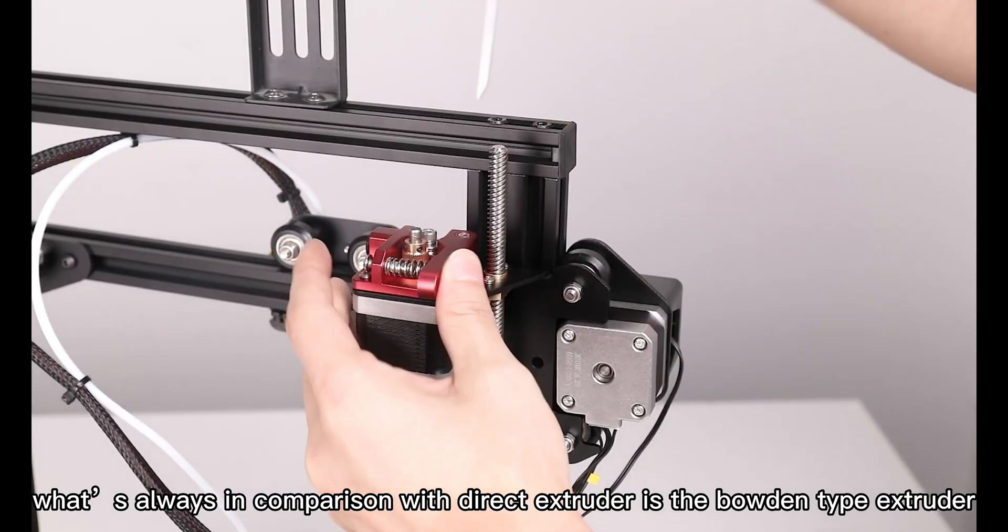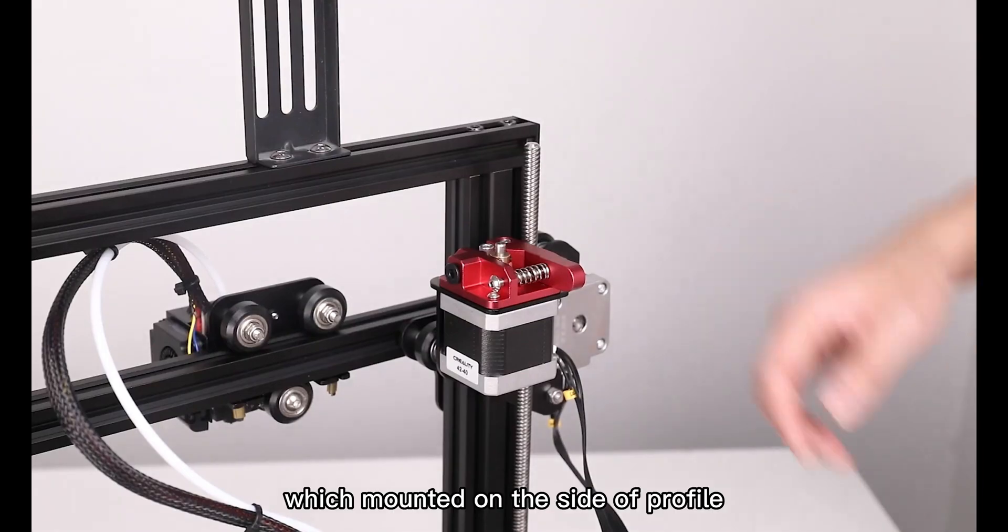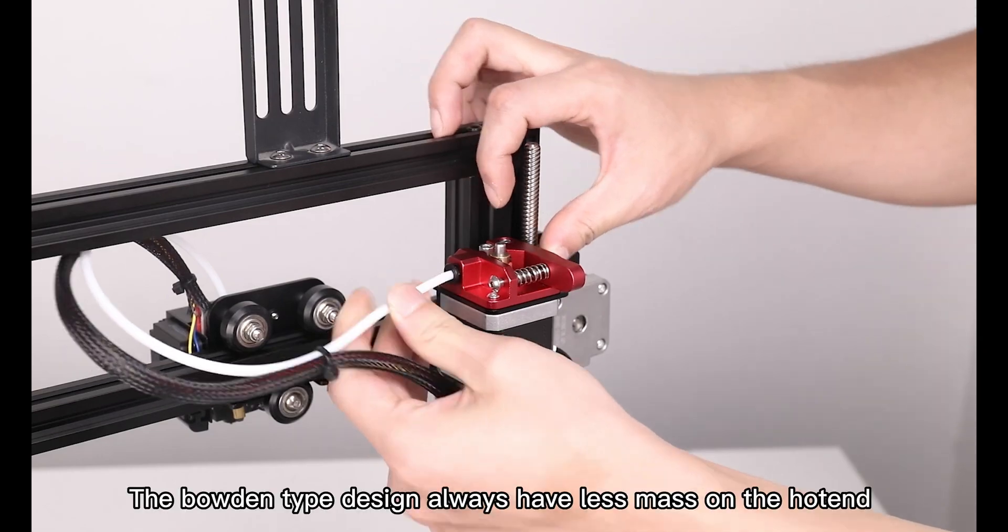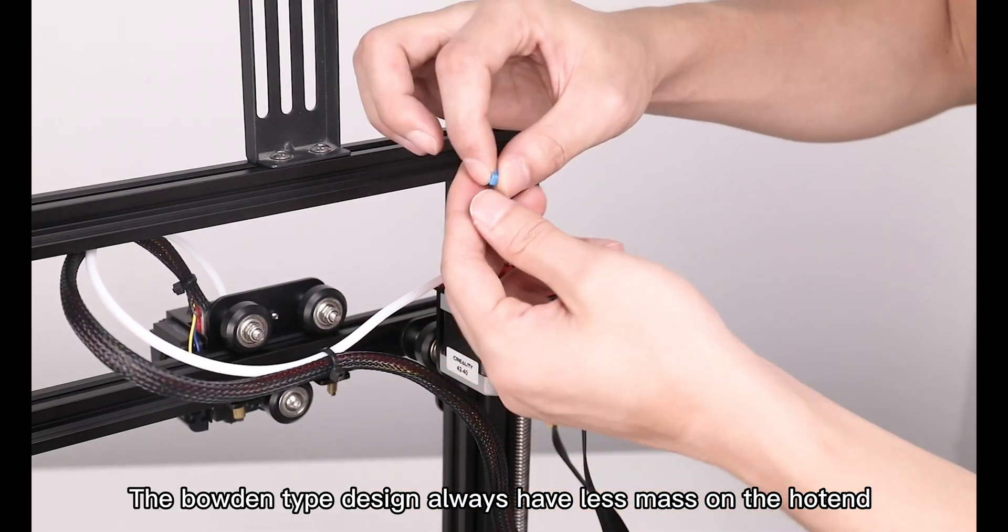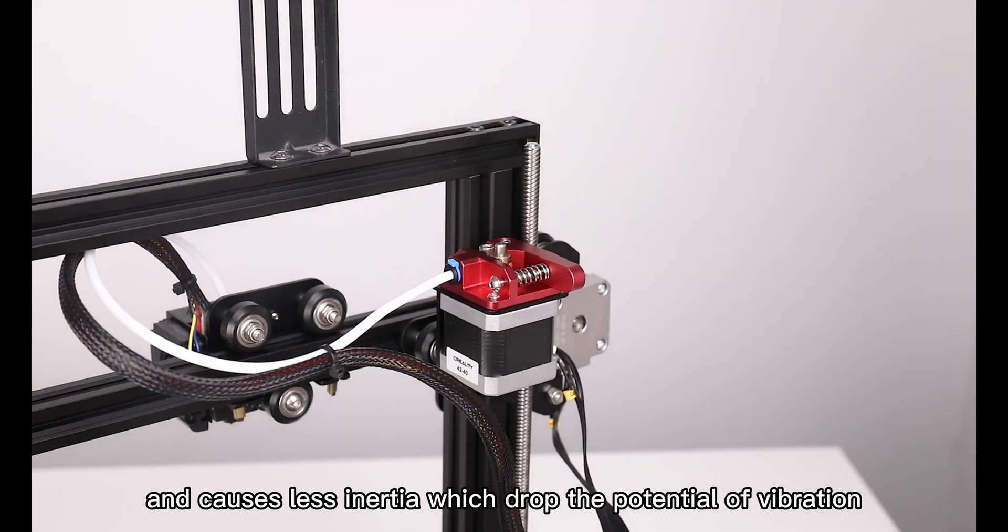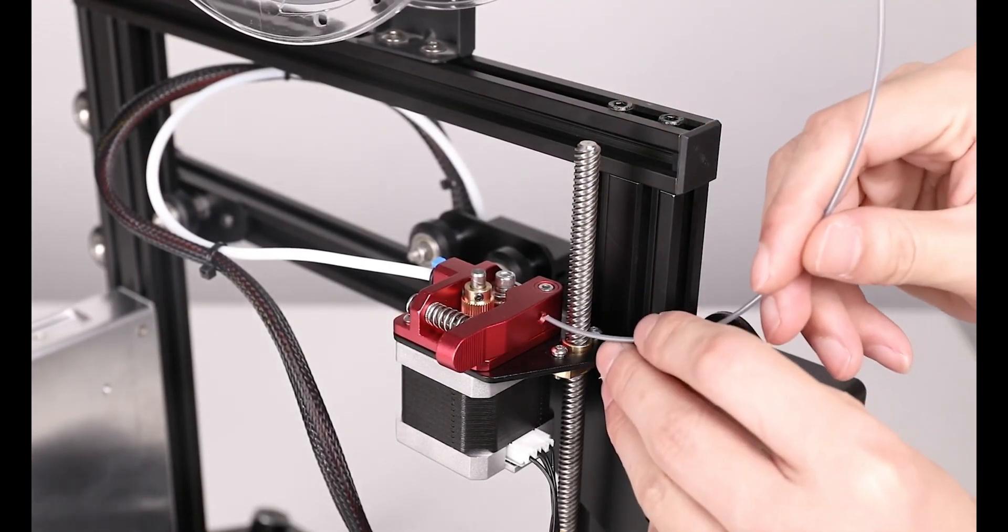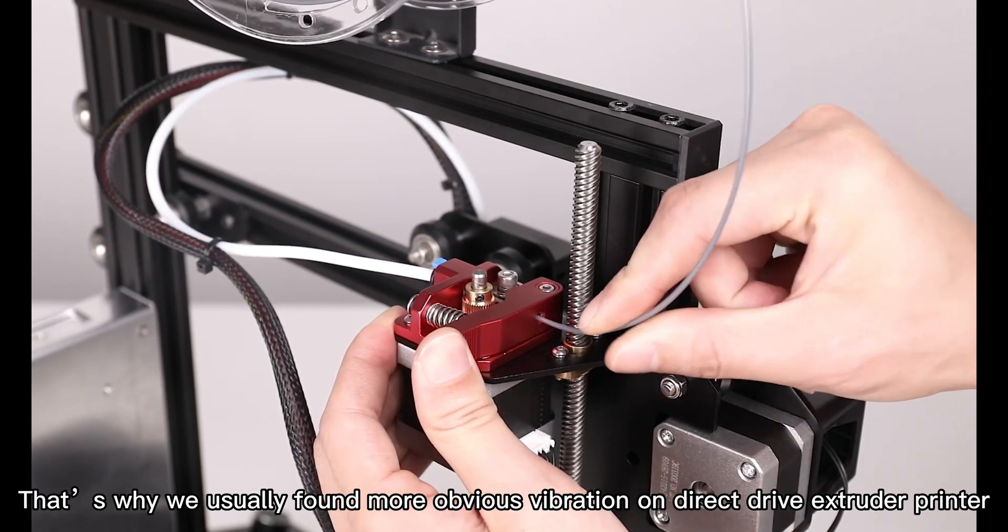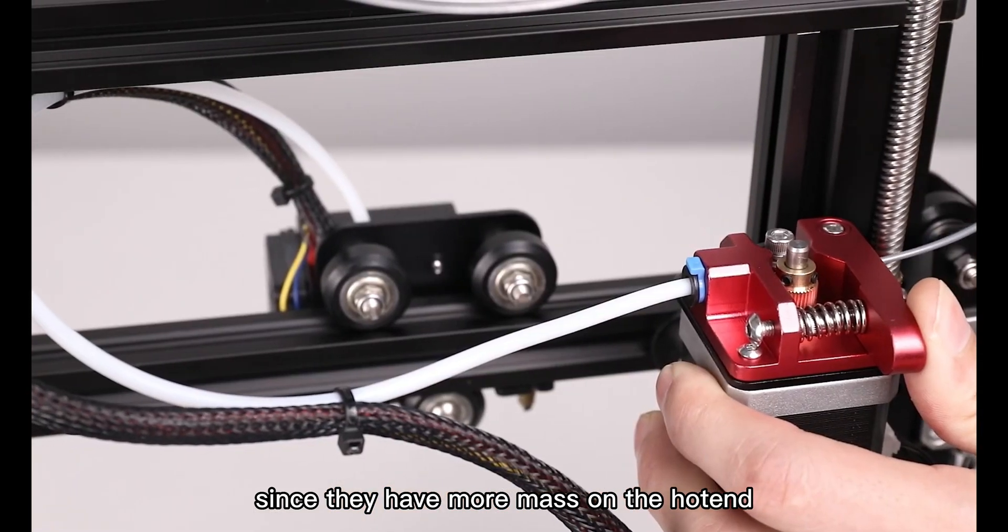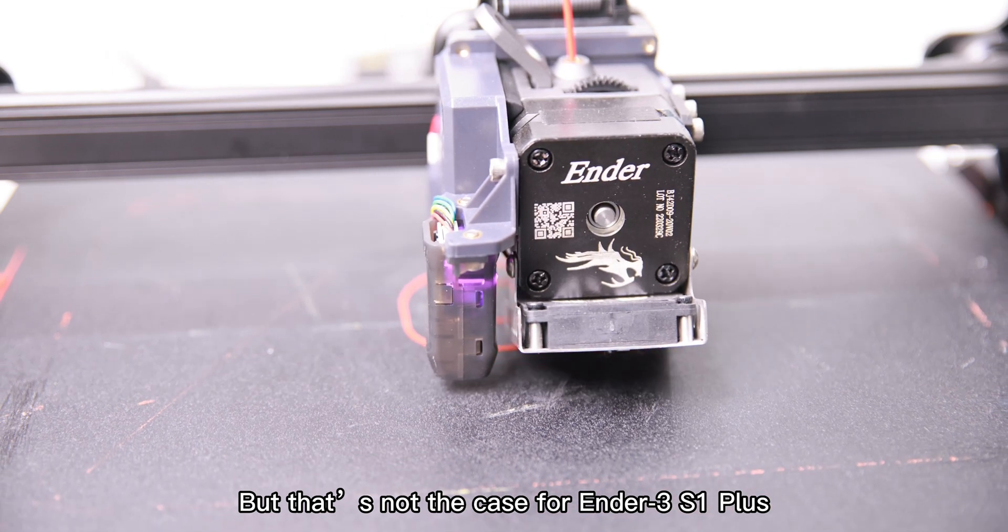What's often compared with Direct Extruder is the Bowden Type Extruder, which is mounted on the side of the profile. The Bowden Type design always has less mass on the hot end than Direct Drive Extruder and causes less inertia, which drops the potential of vibration. That's why we usually find more obvious vibration on Direct Drive Extruder printers since they have more mass on the hot end.